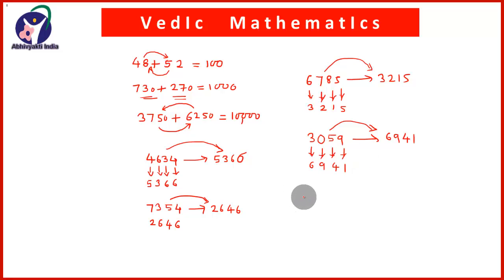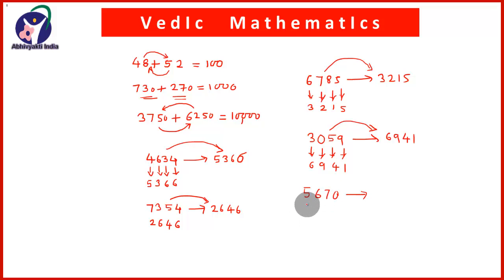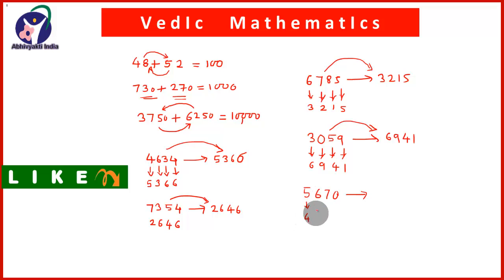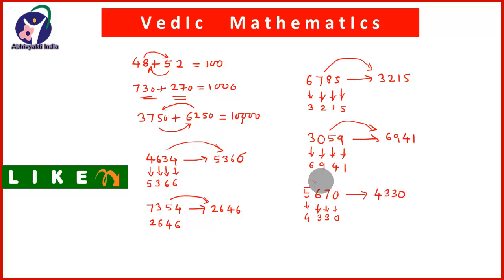Now, if the number ends with 0 — meaning the unit place is 0 — how do we find the complement? If the number is 5,670, the unit place digit is 0. Then do like this: 5 and 4 give 9; 6 and 3 give 9; since the last non-zero digit is 7, we take 7 and 3 to give 10; and the last digit remains 0. So the complement of 5,670 is 4,330.